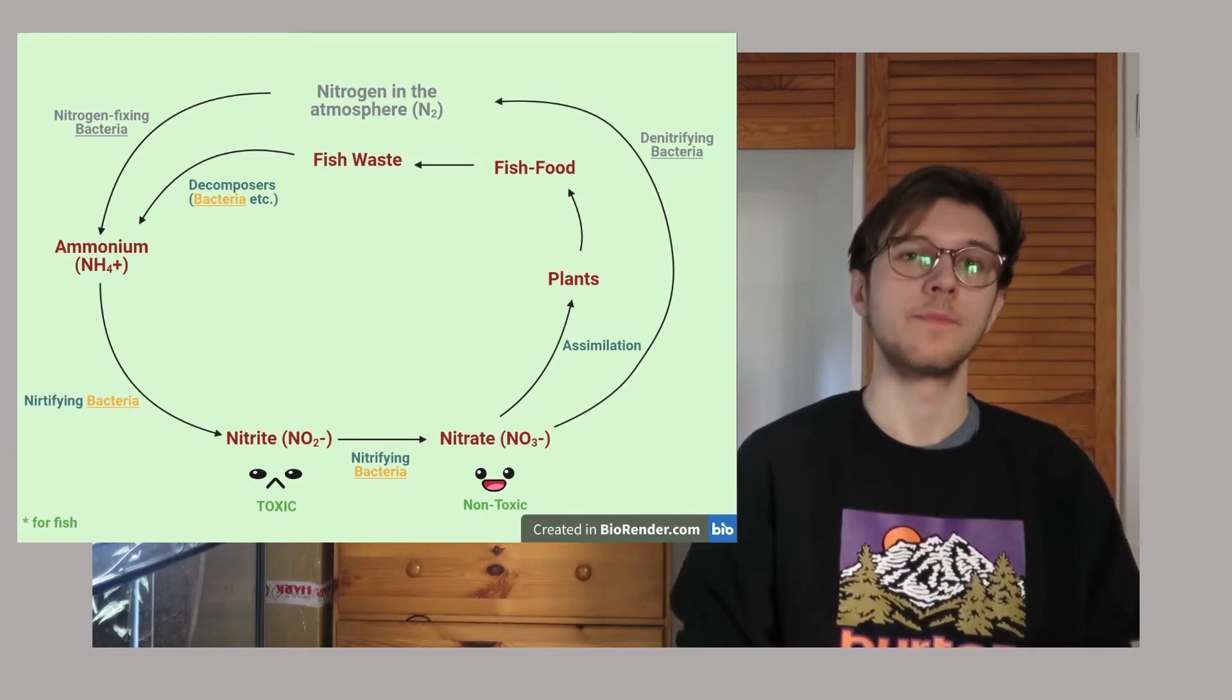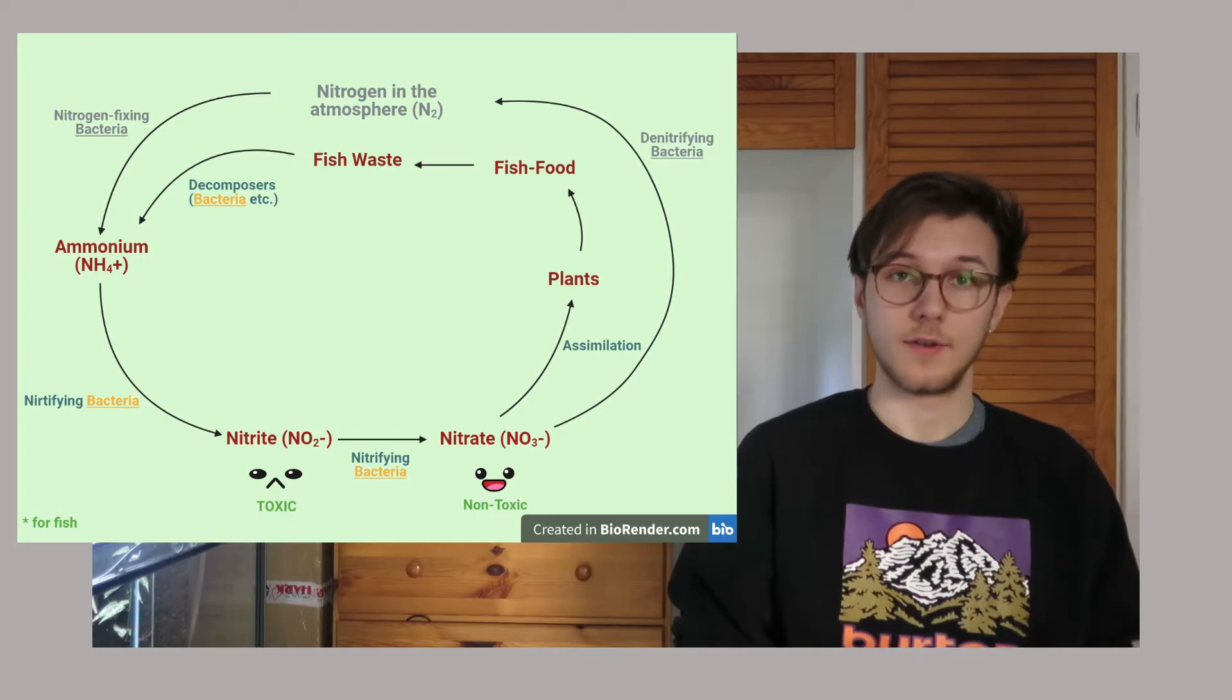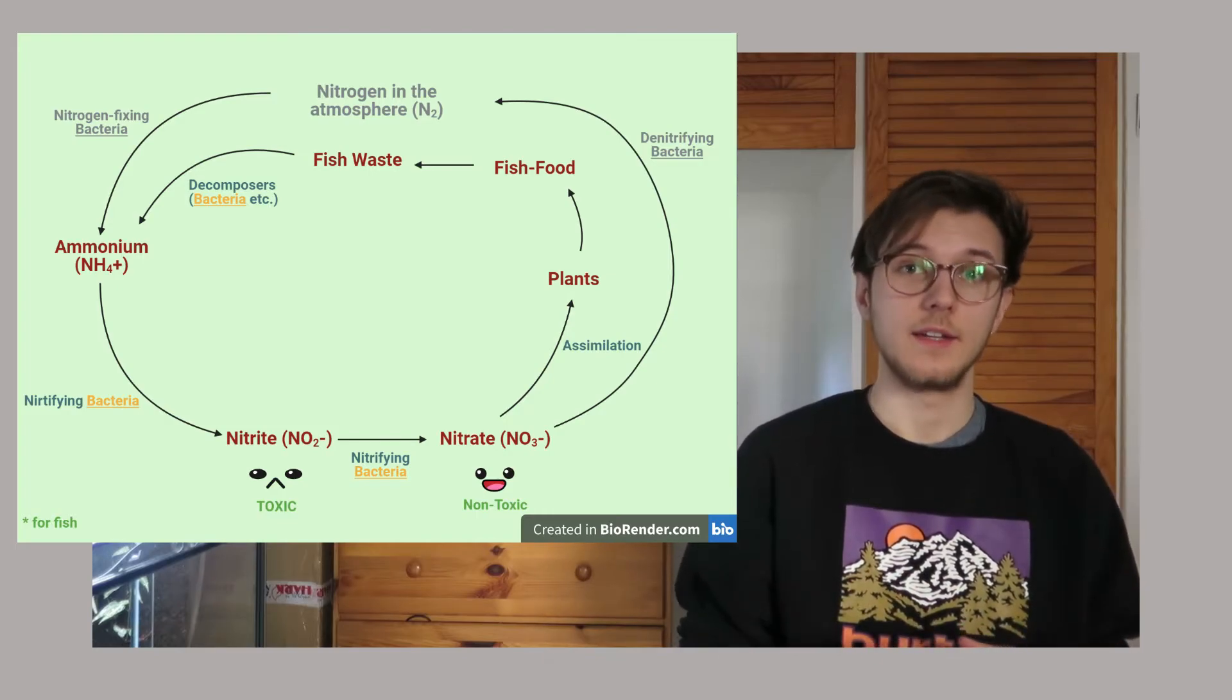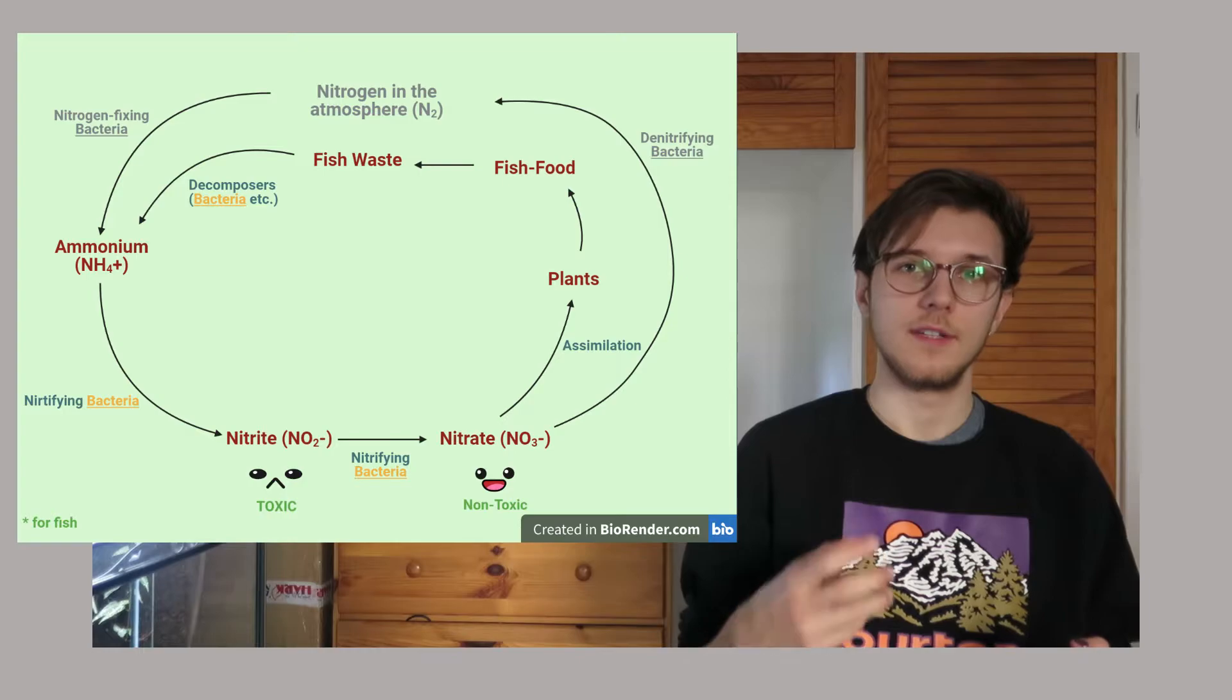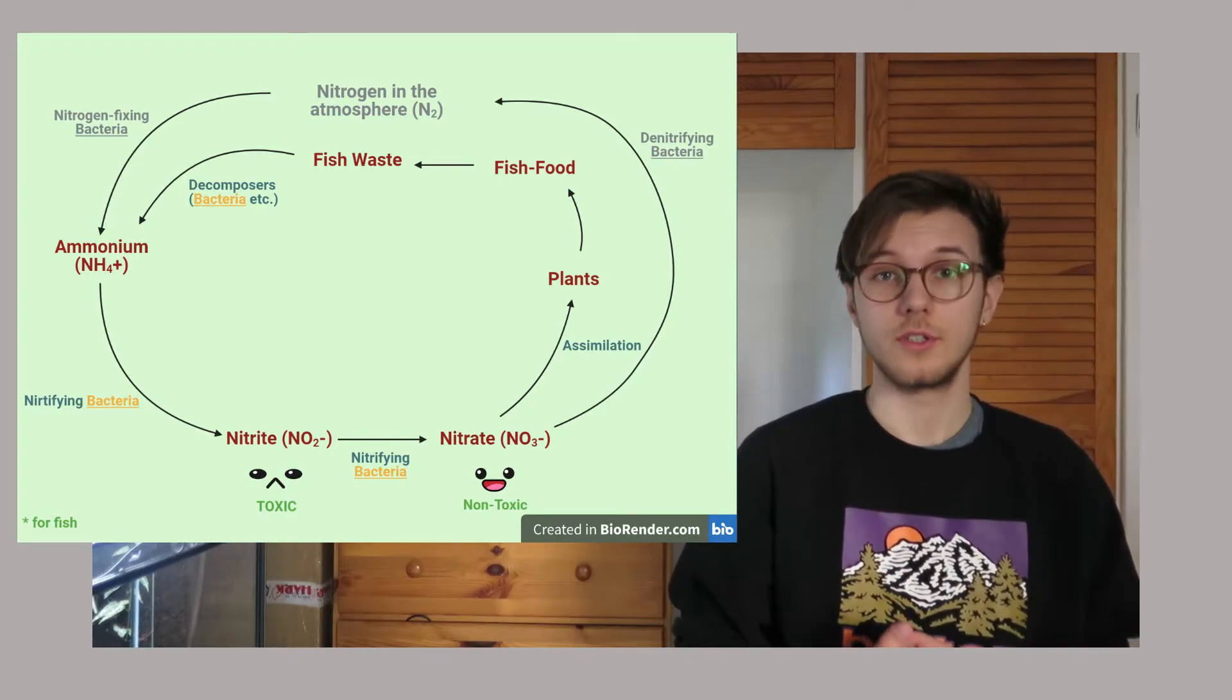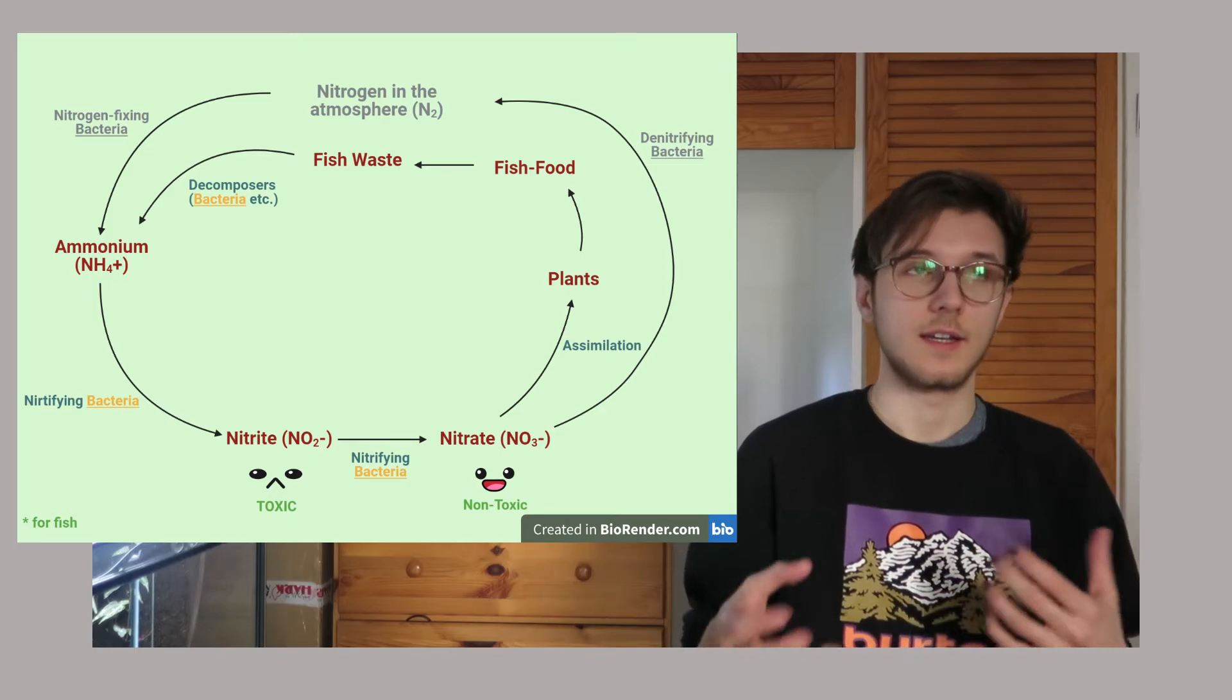Then again, you have the same things as the nitrogen cycle usually has. You have your nitrite and nitrate, and the nitrate gets assimilated in plants. They take it because, as I mentioned, they need it to grow.